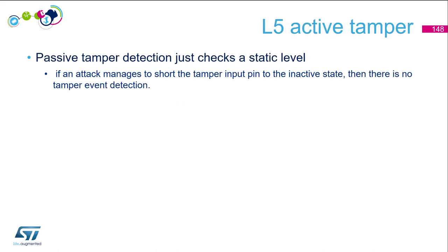When we talk about passive tamper detection, it just checks a static signal. We have one pin, and if the level of that pin goes to an inactive state, then we have an event. However, if an attacker manages to hold the tamper input pin to this inactive state, then there is no tamper event detection.